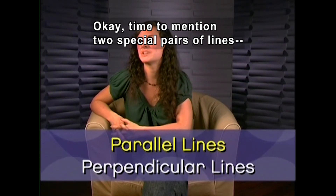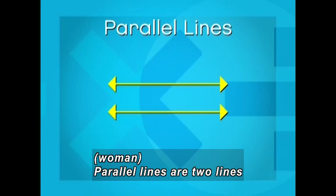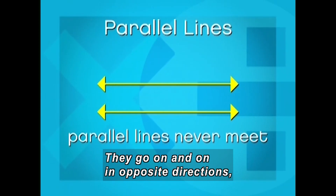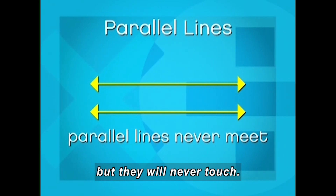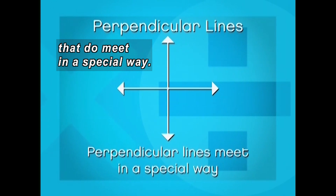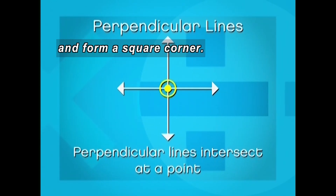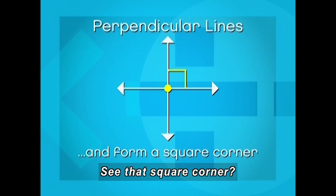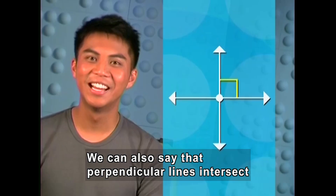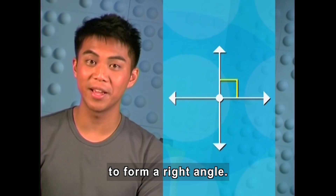Okay, time to mention two special pairs of lines: parallel lines and perpendicular lines. Parallel lines are two lines that never meet. They go on and on in opposite directions, but they will never touch each other — they do not intersect. Perpendicular lines are two lines that do meet in a special way. They intersect each other at a point and form a square corner. Notice that there are four square corners where perpendicular lines meet. We can also say that perpendicular lines intersect to form a right angle, but we'll talk about that later.